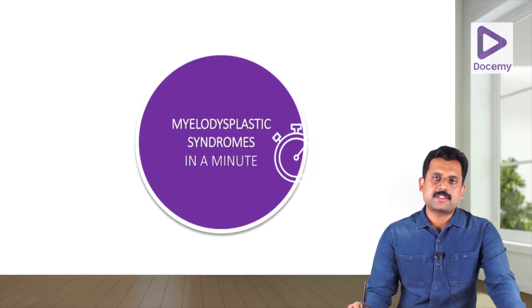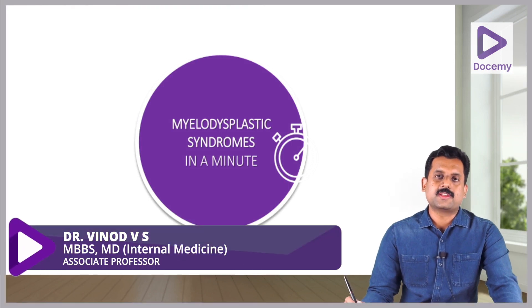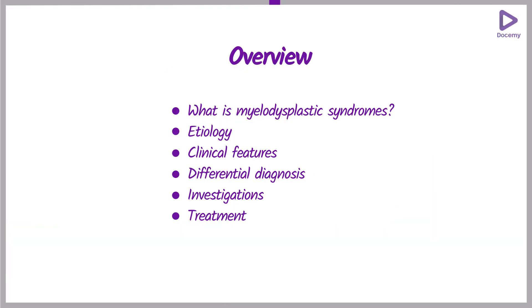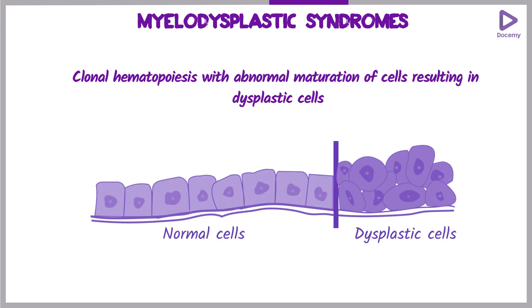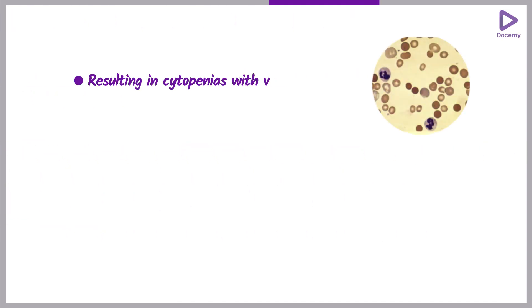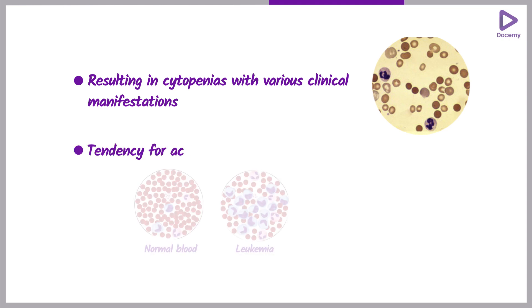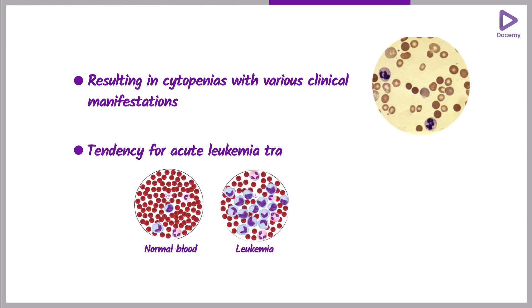Myelodysplastic syndromes in a minute. By definition, MDS is clonal hematopoiesis with abnormal maturation of cells resulting in dysplastic cells, resulting in cytopenias with various clinical manifestations. There is also a tendency toward acute leukemia transformation.